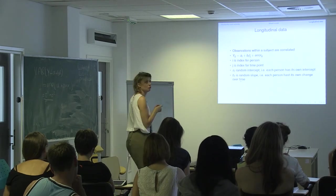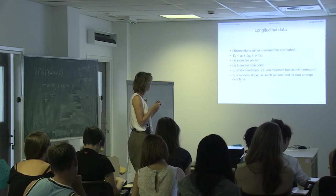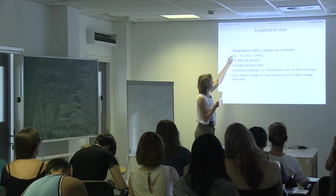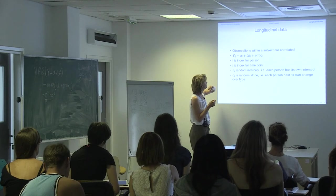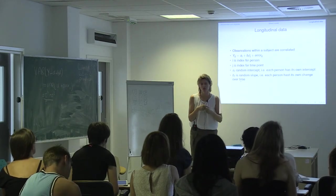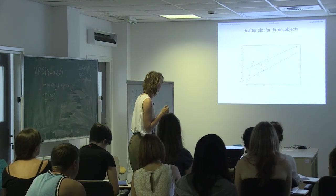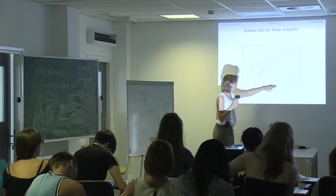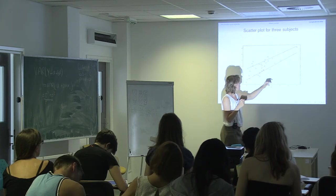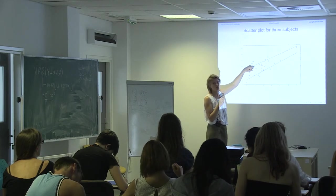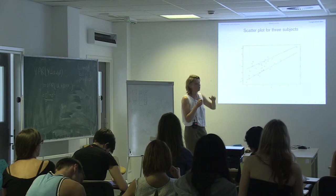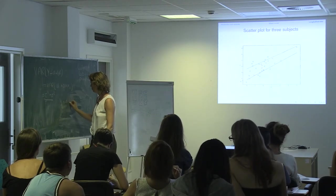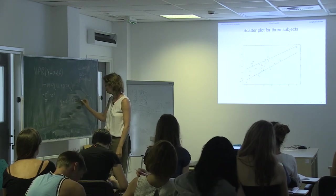Then we have one more part: longitudinal data. This is also a random effects model, a mixed effect model, but it's a little bit more complicated. I is a person, and J is the index for the time point. I made here a picture of three persons from the dataset. Assume that we have time zero and it goes on. We have a person with blue values, a person with pink values, and a person denoted with green values. We had before: Y is alpha plus beta X plus U plus error. What this U does is take care that the intercept is random.